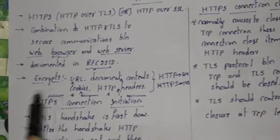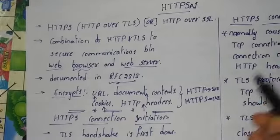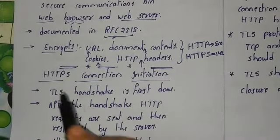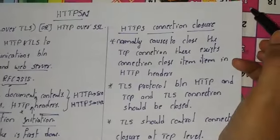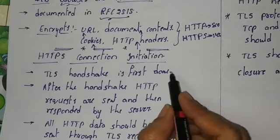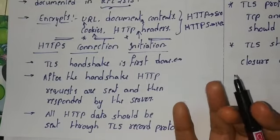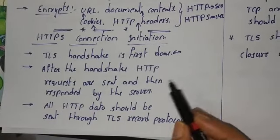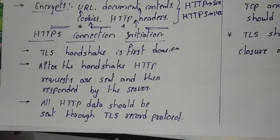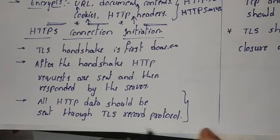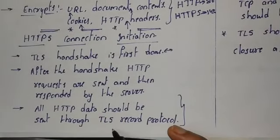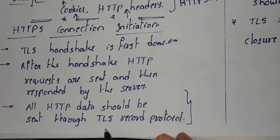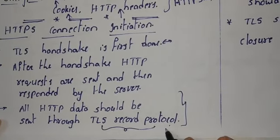HTTPS uses a higher port number than normal HTTP. There are two important parameters: HTTP connection initiation and HTTP connection closure. For connection initiation, the HTTPS handshake is performed first. After the handshake, HTTP requests are sent and responded to by the server. All HTTP data is sent through the TLS record protocol, which has two fields — one for the type of data and another for the data being transmitted.